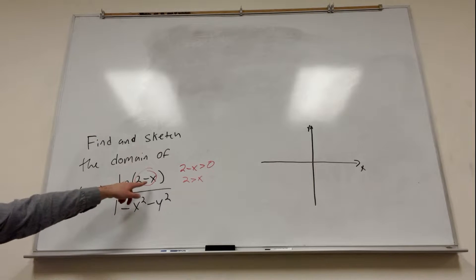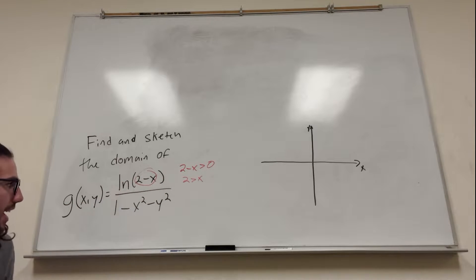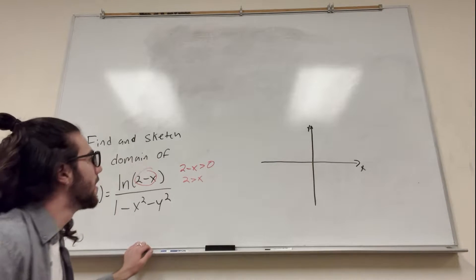Because if x is anything, say x is 3, it's going to be 2 minus 3, it's going to be negative 1, can't exist. Pretty cool. So that's a true thing. Let's go draw this.